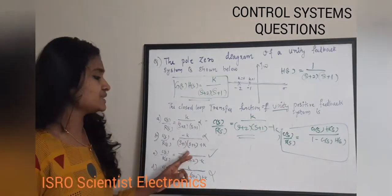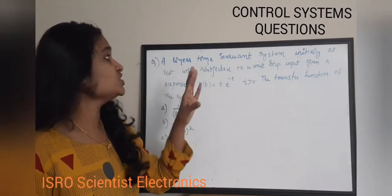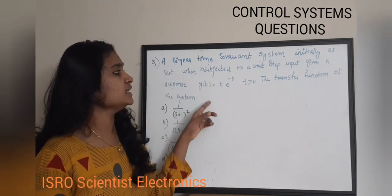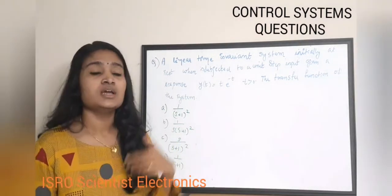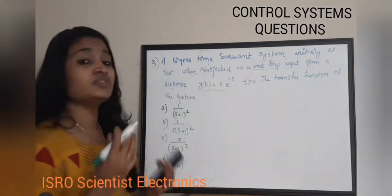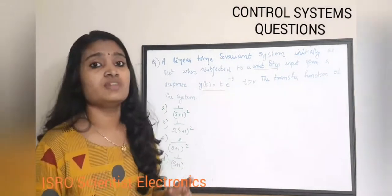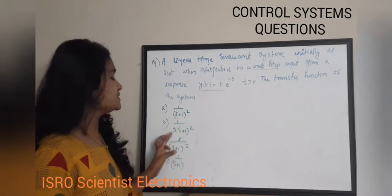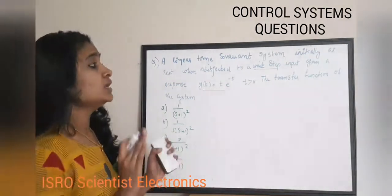The second question: a linear time-invariant system, initially at rest, when subjected to a unit step input gives a response y(t) = t·e^(-t) for t > 0. Find the transfer function of the system. The options are: A) (1+s)/(s+1)², B) 1/[s(s+1)²], C) s/(s+1)², D) 1/(s+1)².